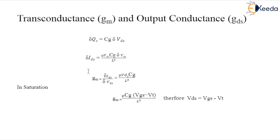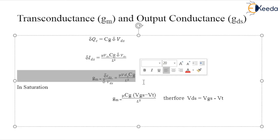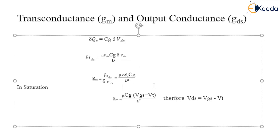Taking delta vds to the denominator gives delta ids / delta vds = gm = μ × vds × Cg / L². This is the resultant equation for transconductance gm.